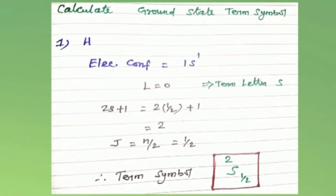The multiplicity 2S+1: S equals 1/2 for one electron, so 2×(1/2)+1 = 2. The sub-shell is exactly half-filled, so J = N/2 = 1/2.